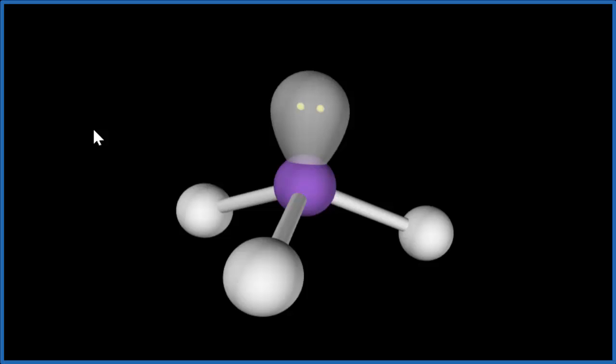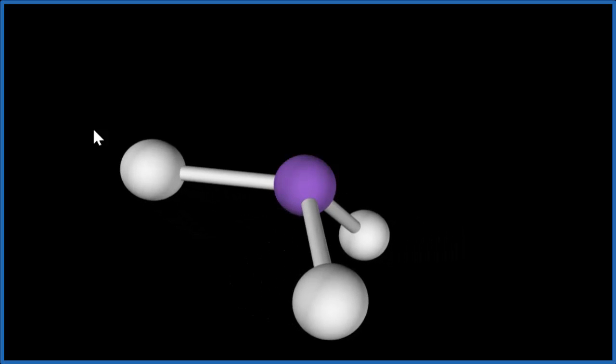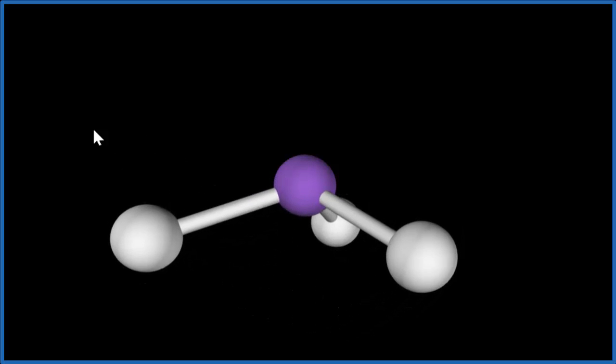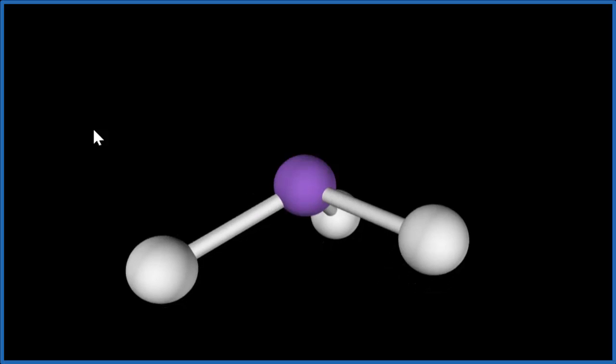When we look at molecular geometry, the lone pair is there, but we kind of hide it. And now we end up with what's called a trigonal pyramidal molecular geometry. So the lone pair is still there pushing down, but we don't really consider that when we look at the name here for the molecular geometry.